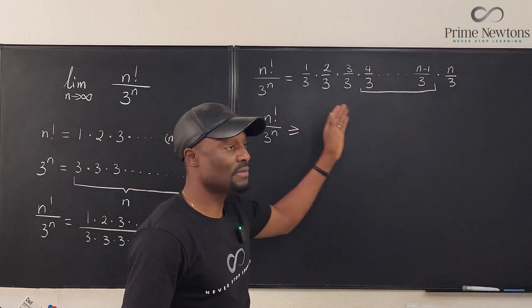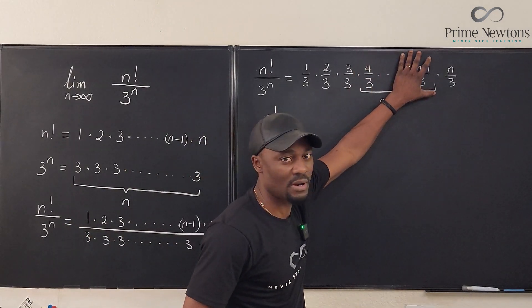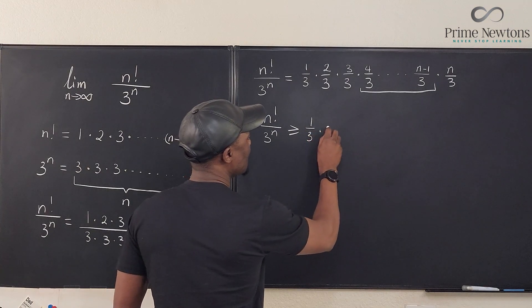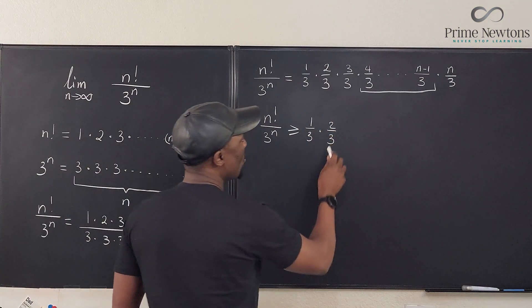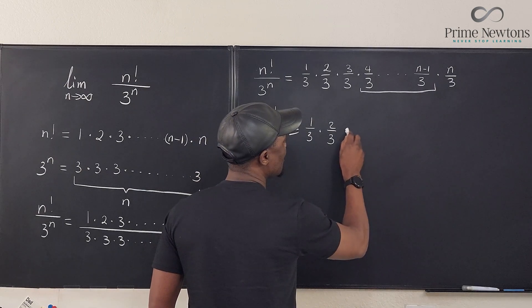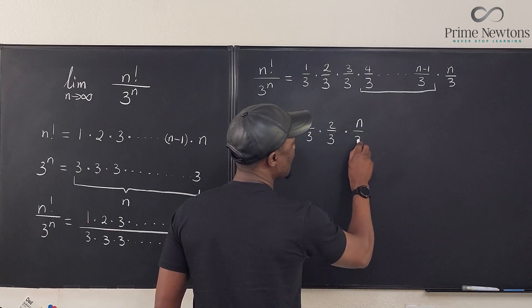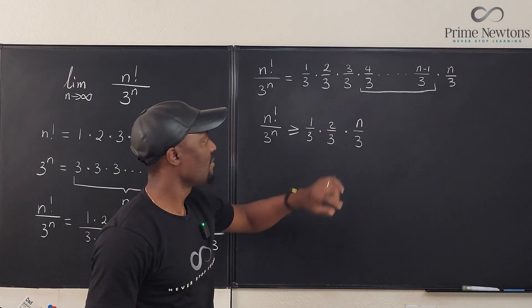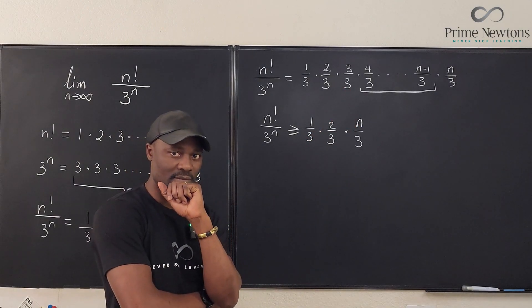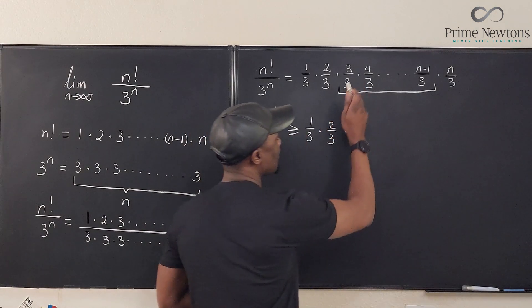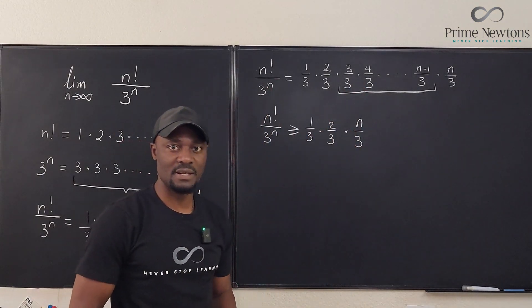So I'm going to delete this part and just write 1 third times 2 thirds. Well, this is 1. It doesn't change anything. So I'm going to write times n over 3 because this is 1. There's no point writing it. So I can actually include this to what I'm deleting because it doesn't make any difference.